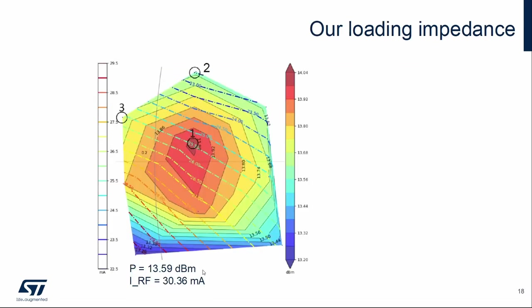We measured power of the carrier 13.59 dBm and the current 30.36 mA. If we visualize these values in the Smith chart, we can see that we are somewhere in this area.